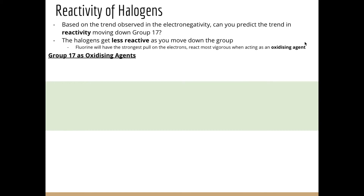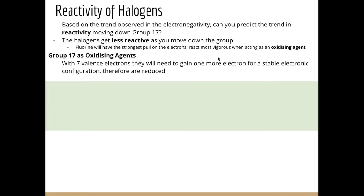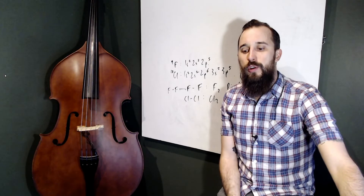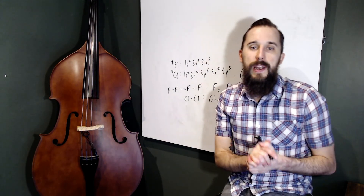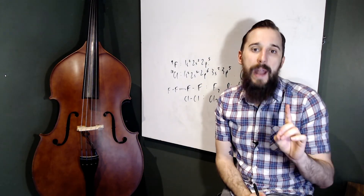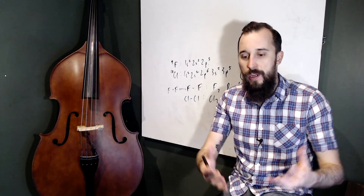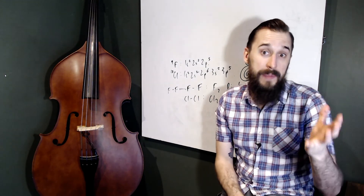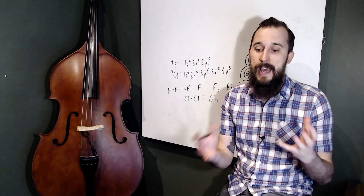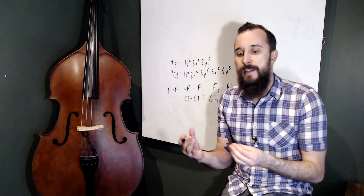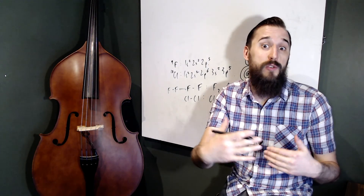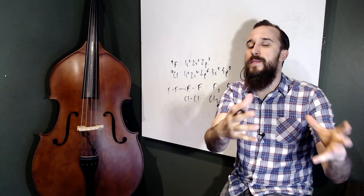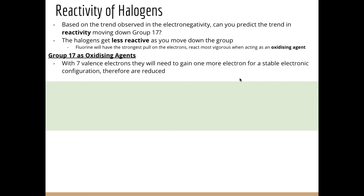Halogens act as oxidizing agents. Group 7 elements have seven valence electrons, so to achieve a stable full octet they want to gain one electron. Gaining electrons is reduction, so Group 7 elements are reduced, which means they cause something else to be oxidized. Redox always involves both a reduction and an oxidation — the halogen gains electrons from something else, causing that substance to be oxidized.